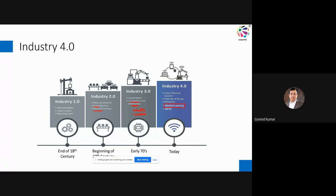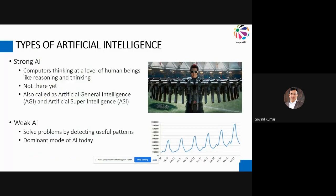There are two types of artificial intelligence: strong AI, which is what we see in movies, and weak AI. We are not at strong AI yet. Where we are today, we are only solving problems by detecting useful patterns — this is the dominant mode of AI today. AI is about bringing human-level intelligence into software. While AI is the objective, machine learning is the technology that drives AI.